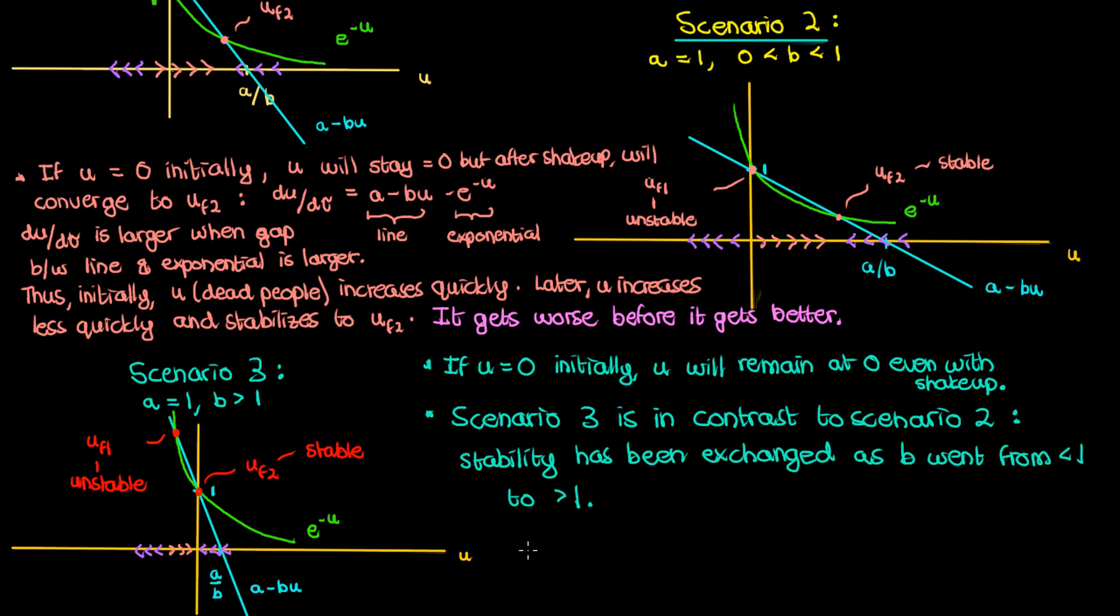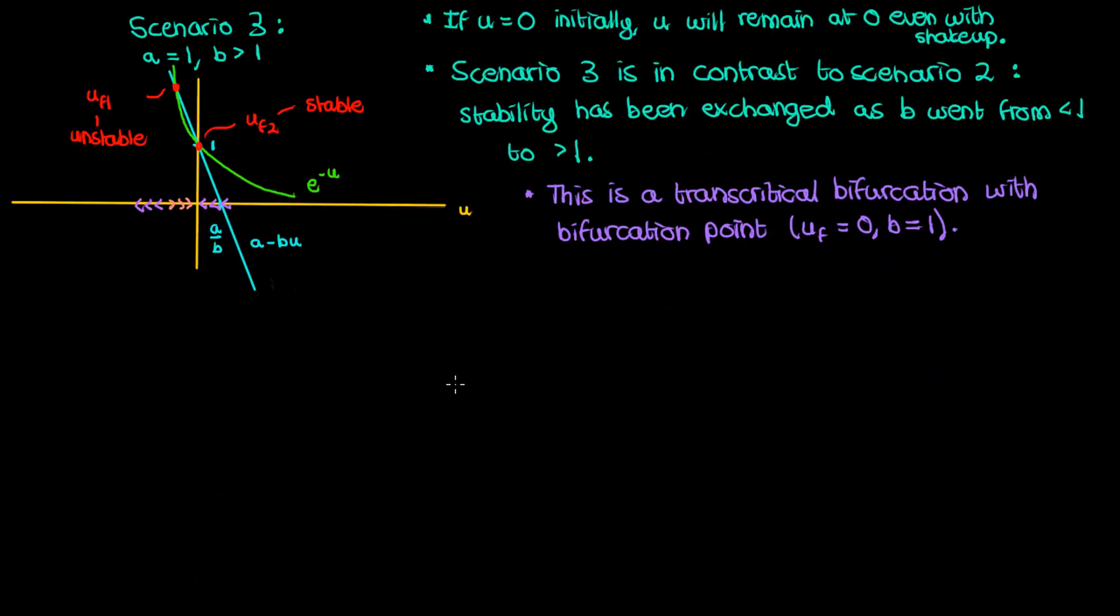Well if you see my bifurcation videos you know that it is a transcritical bifurcation. The bifurcation point here corresponds to a b of one and a u of zero since u equals zero is the fixed point that remains constant throughout.